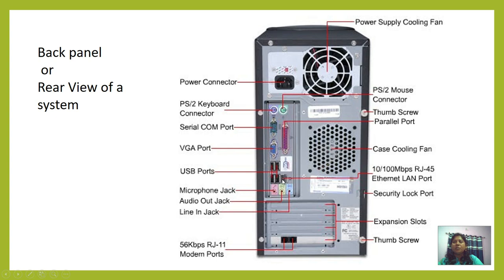This port is called the RJ45 connector port, also known as the Ethernet LAN port. And here is the RJ11 modem port. So this one is the RJ45 LAN port and this one is the RJ11 modem port. These are the expansion slots, used for attaching new graphics cards or Wi-Fi LAN cards. So here you have an overview of the basic components and the layout of the front panel and back panel of the system.